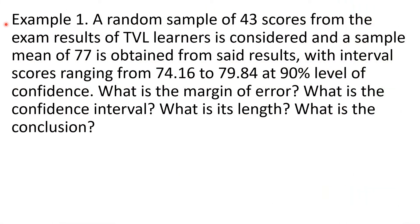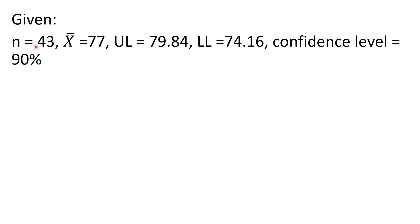Example 1: A random sample of 43 scores from the exam results of PBL learners is considered, and a sample mean of 77 is obtained, with interval scores ranging from 74.16 to 79.84 at a 90% level of confidence. What is the margin of error? What is the confidence interval? What is its length? What is the conclusion? The given in the problem are: sample size = 43, sample mean = 77, upper limit = 79.84, lower limit = 74.16, and confidence level = 90%.